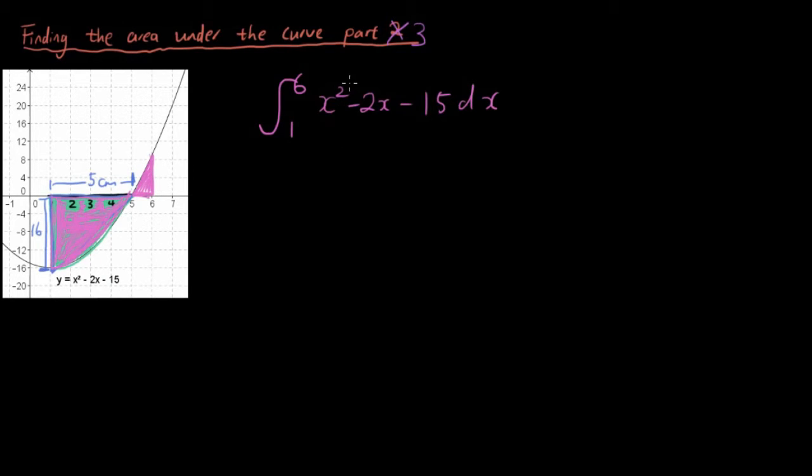This area here is going to be positive because it's above the x-axis, and the definite integral is actually not smart enough to combine them for you. If you remember our lesson before, just the green area was 42⅔, right?